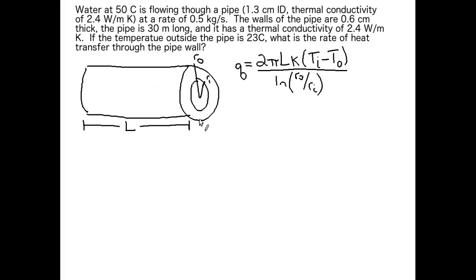So that takes care of our equation for q. And we actually don't need to rearrange this equation because we are asked to find the rate of heat transfer through the pipe wall which is q. What we have to do now is make sure that we're putting our information into the correct place and we're also using the correct information.